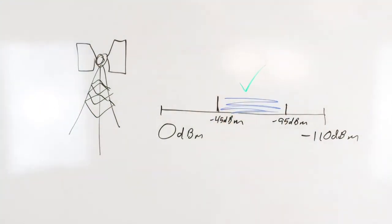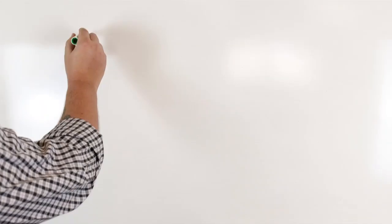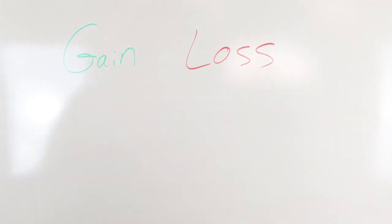The overall performance of the signal booster can be measured in what is called gain and loss. Gain is an increase in signal strength while loss is a decrease in signal strength.